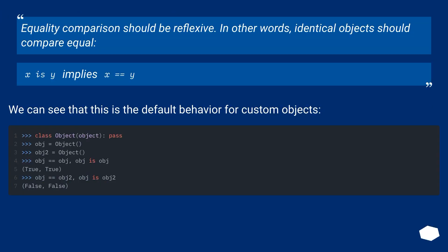Equality comparison should be reflexive. In other words, identical objects should compare equal. x is y implies x equals equals y. We can see that this is the default behavior for custom objects.